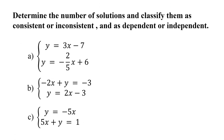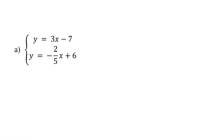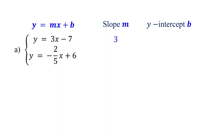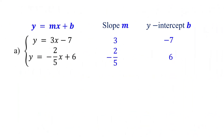Sometimes you only need to determine the number of solutions and classify the system without fully solving it. In such cases, compare the slopes and y-intercepts of the equations. In this example, both equations are in slope-intercept form: the first has slope 3 and y-intercept negative 7, the second has slope negative 2/5 and y-intercept 6. Since the slopes are different, the system has one solution and is consistent and independent.